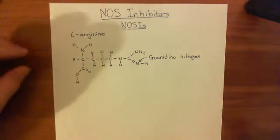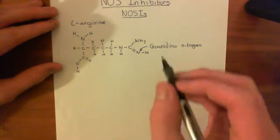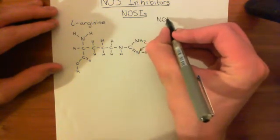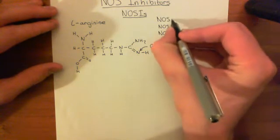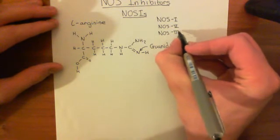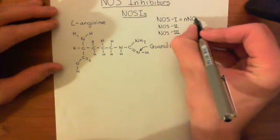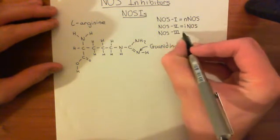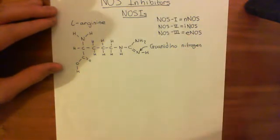There are three types of NOS enzyme: NOS1, NOS2, and NOS3. The old names were NOS1 called nNOS, standing for neuronal NOS; NOS2 called iNOS, standing for inducible NOS; and NOS3 called eNOS, standing for endothelial NOS.